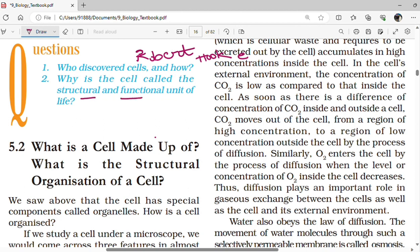Why is the cell called the structural and functional unit of life? Cells are called the structural and functional unit of life because all living organisms are made up of cells and also all the functions taking place inside the body of organisms are performed by cells.